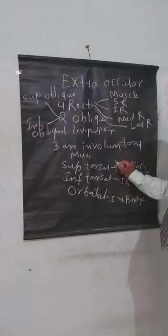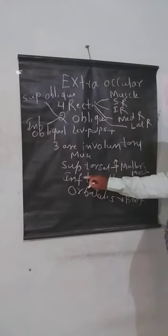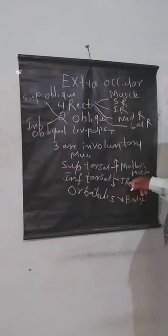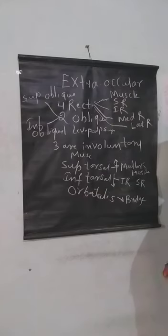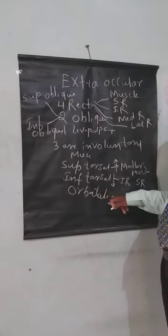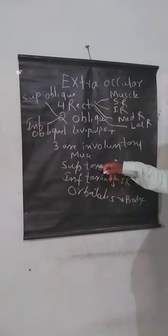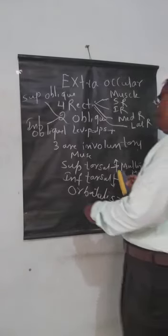Superior tarsal helps in elevation, inferior tarsal is present in the depression of the eyeball. Orbitalis bridges the inferior orbital fissure and its function is uncertain. To repeat: the involuntary muscles are superior tarsal which elevates, inferior tarsal which depresses, and orbitalis whose function is uncertain.